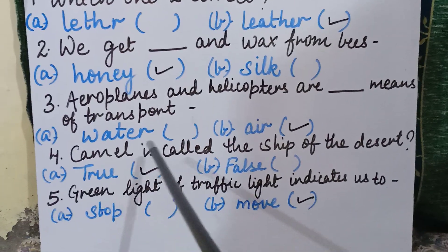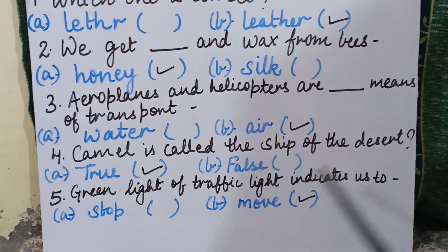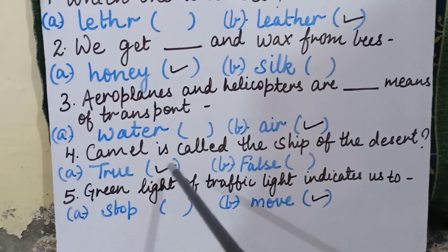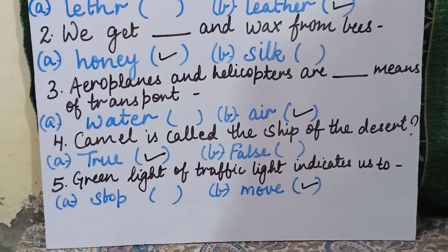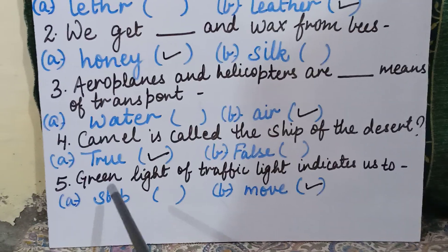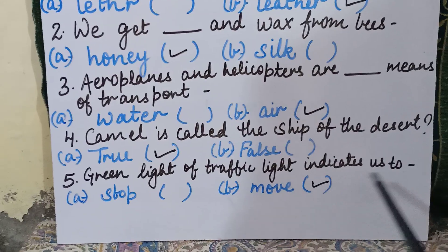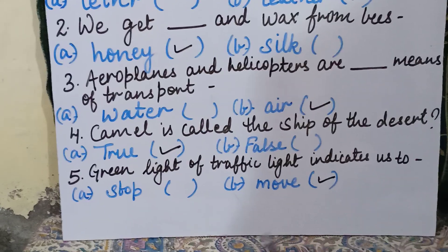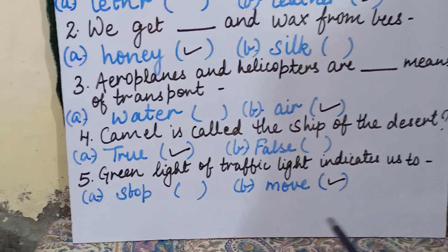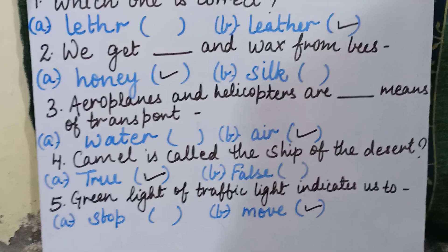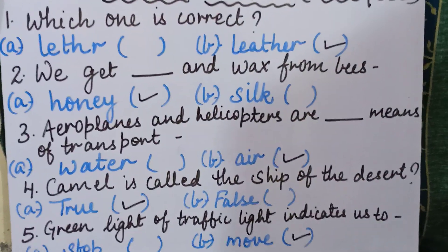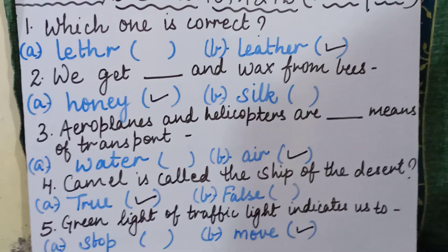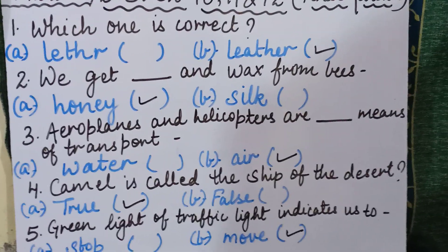Question 4 — camel is called the ship of the desert: true or false? This is true, so tick in front of true. Question 5 — green light of traffic light indicates us to stop or move? Correct answer is move. I hope you all have understood all five questions. Now moving forward to the other questions.